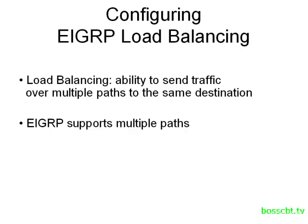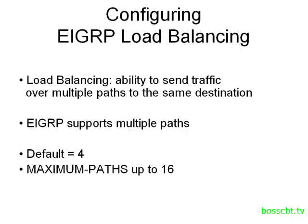There are a few more similarities between OSPF and EIGRP when we talk about load balancing. EIGRP defaults to four, so it will support four equal cost paths by default. We can use the maximum paths command with EIGRP to extend that up to 16 different paths at the same time, all within equal cost. If you haven't yet checked out the OSPF tutorial on load balancing, do so because there we get into the details of using the maximum paths command.